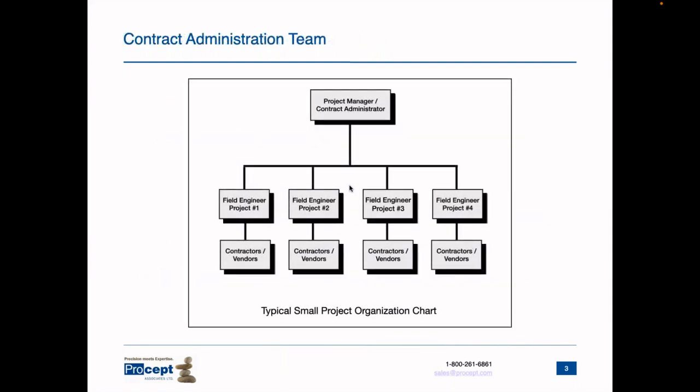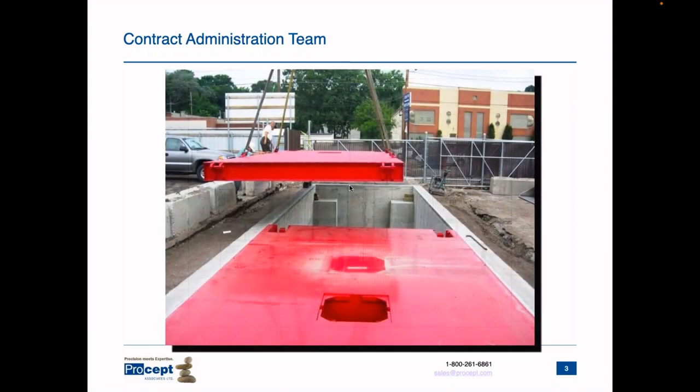To put this in perspective of what I mean by a contract administration team, here are typical organization charts from projects I have worked on. This is a small project organization — these projects were around several million dollars. I was the project manager and contract administrator, with projects in four different locations and a field engineer in each location. Examples would include a small truck scale or a clarifier.